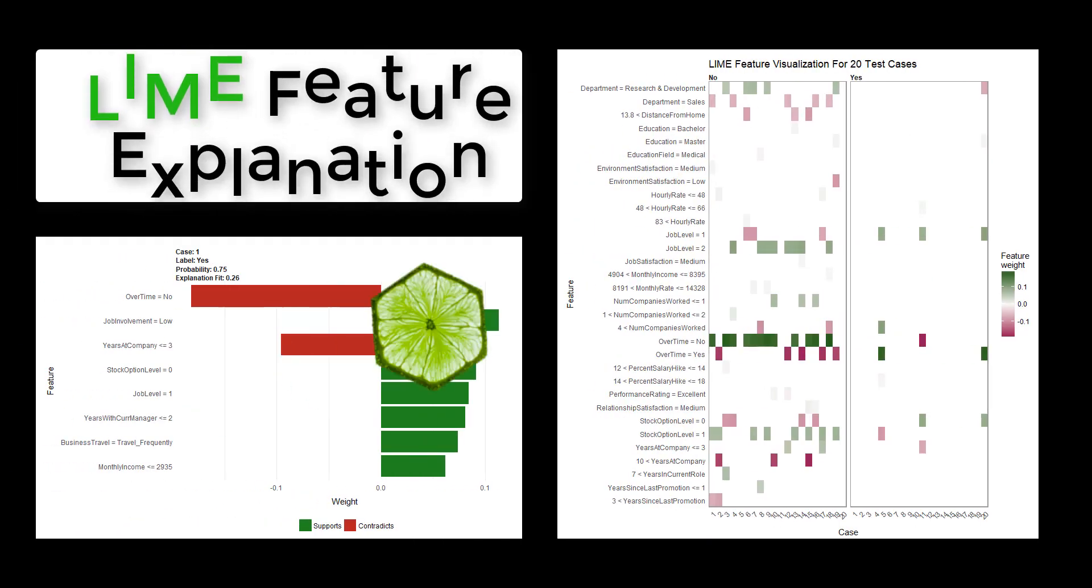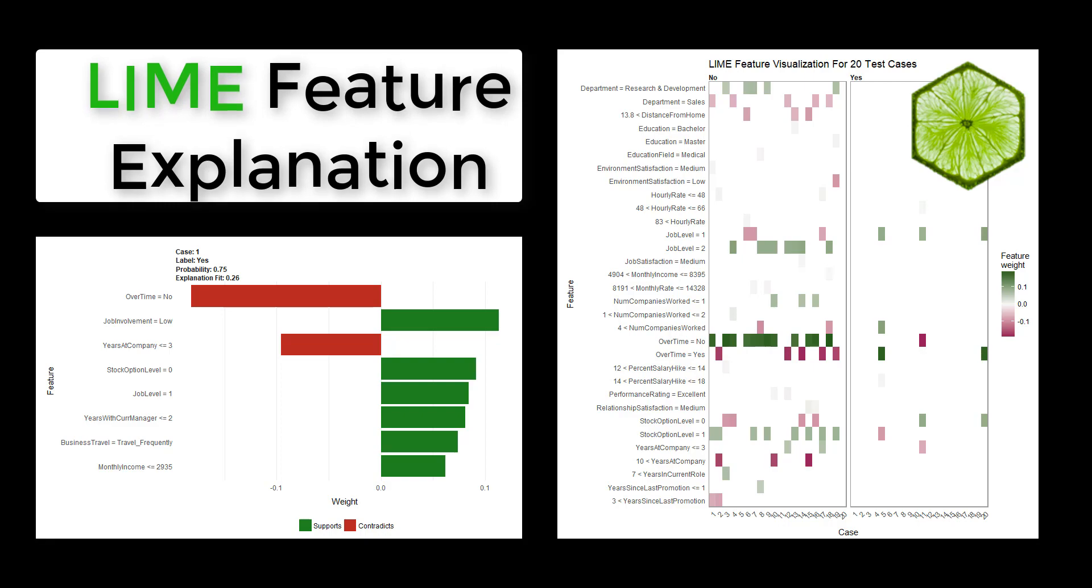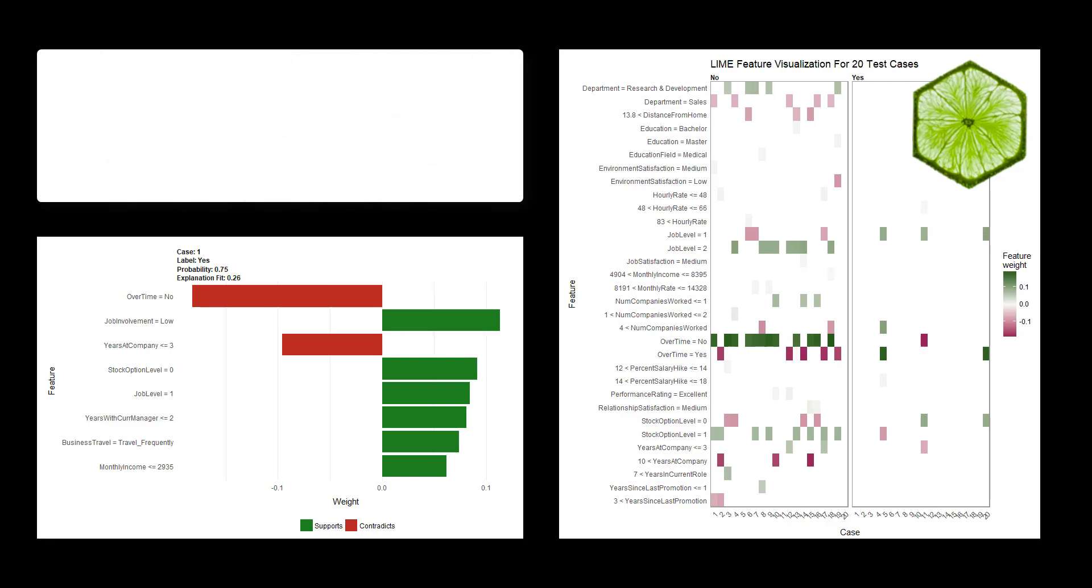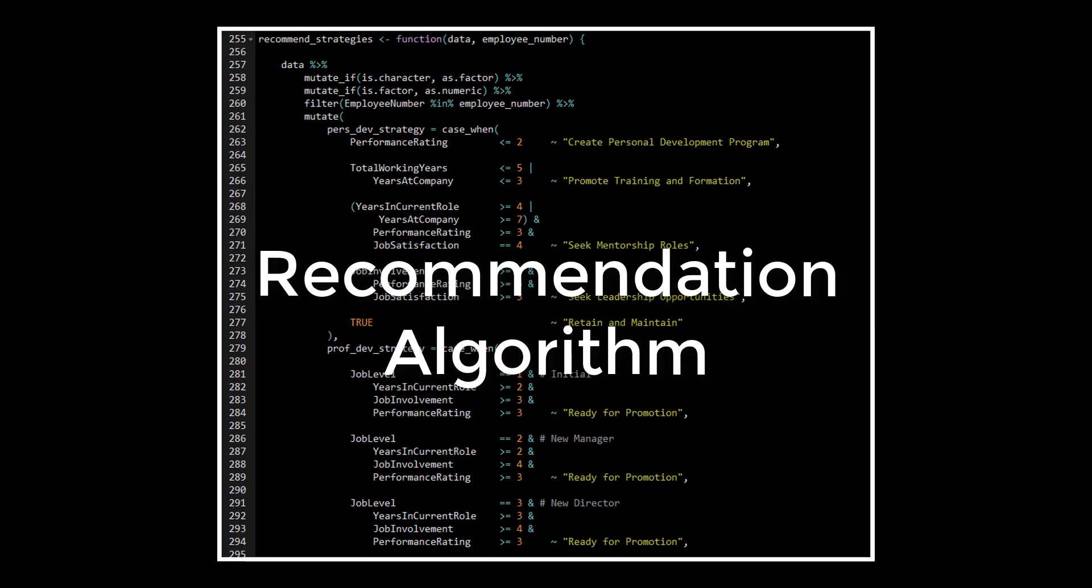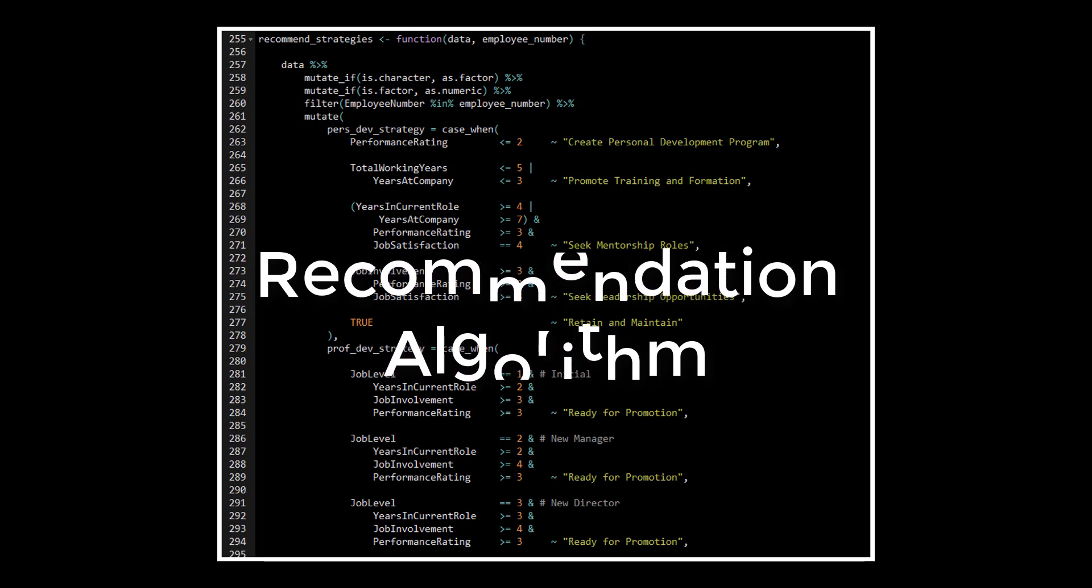Next, we use Lime to explain the black box classification model, showing which features drive whether the employee stays or leaves. Finally, we put our data science investigative skills to use developing a recommendation algorithm that helps managers and executives make better decisions to prevent employee turnover.